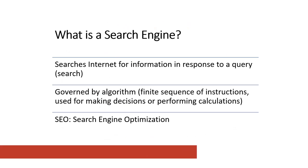So the first thing I want to talk about is what is a search engine. A search engine is a piece of software that scours the worldwide web for information in response to a query — a search. The way it takes information it finds and presents it to the user is entirely governed by what's called an algorithm. An algorithm is a finite sequence of instructions that can be used for making decisions or performing calculations. If you're familiar with a decision tree, that is a type of algorithm.